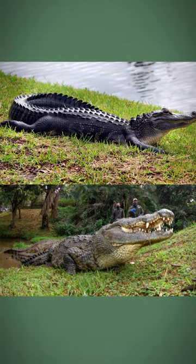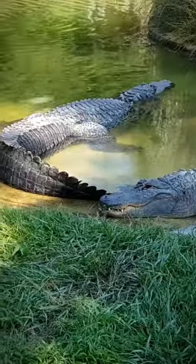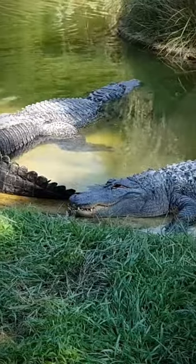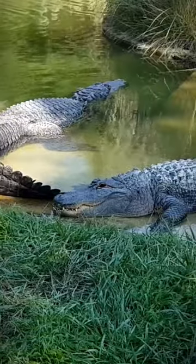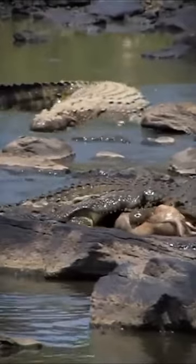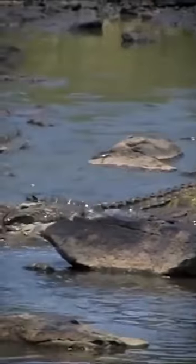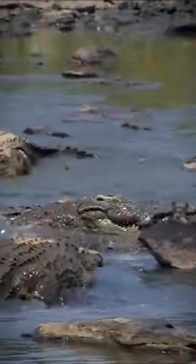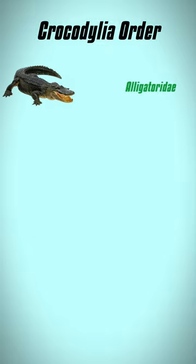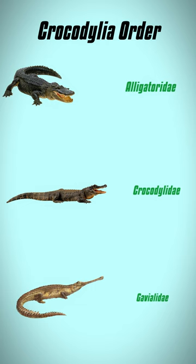Alligators and crocodiles may seem very similar at first glance, but the two animals have loads of differences. The similarity in physical form is because they have the same evolutionary ancestor. According to the journal Pathology of Wildlife and Zoo Animals, the Crocodilia order is divided into three families: namely Alligatoridae, Crocodylidae, and Gavialidae.